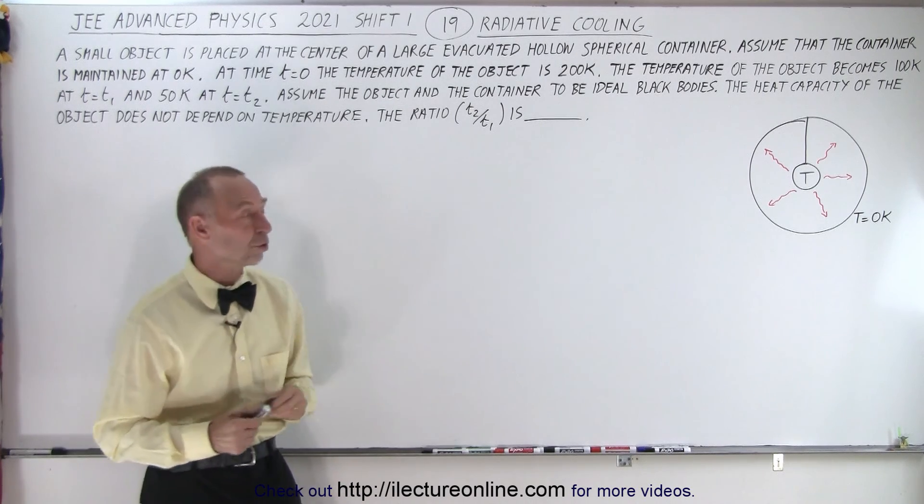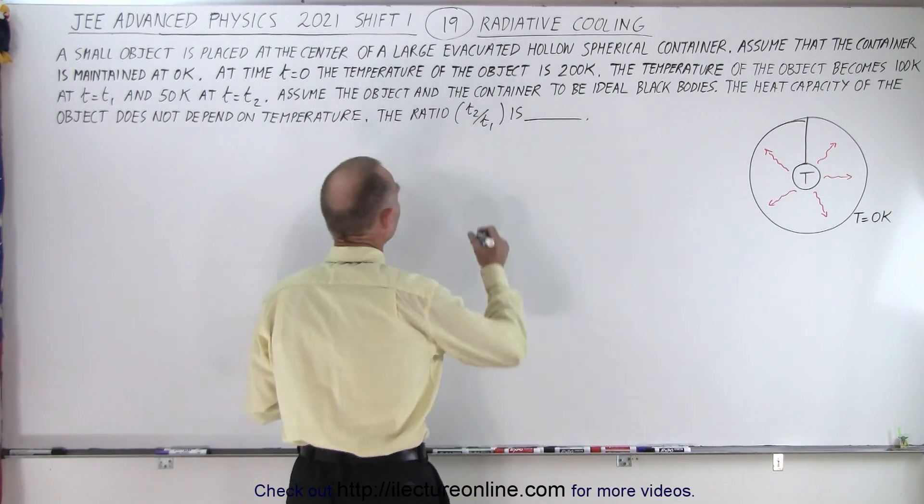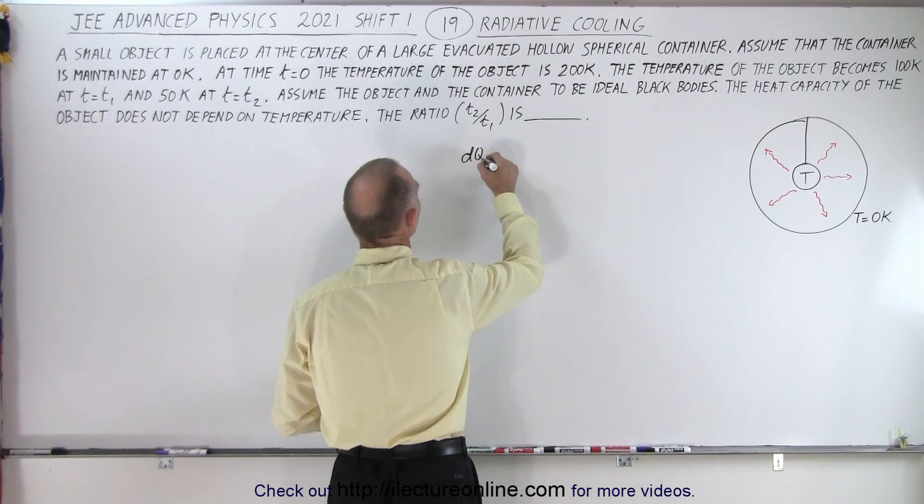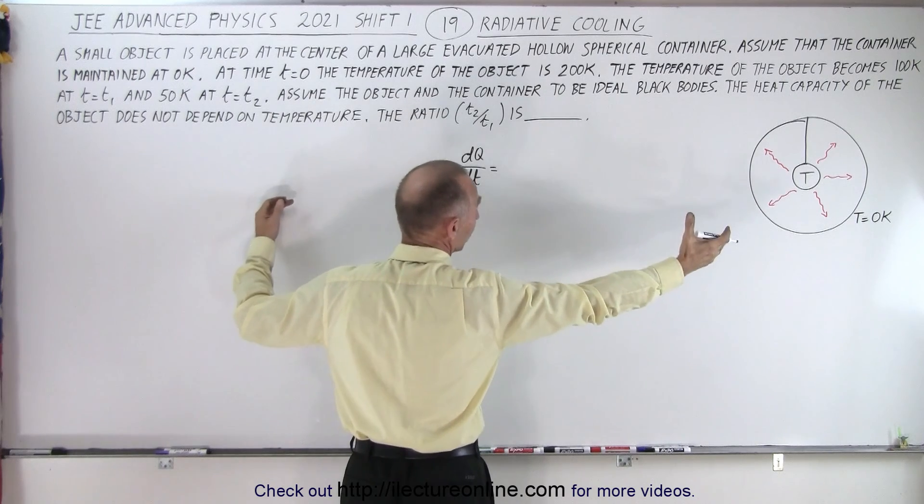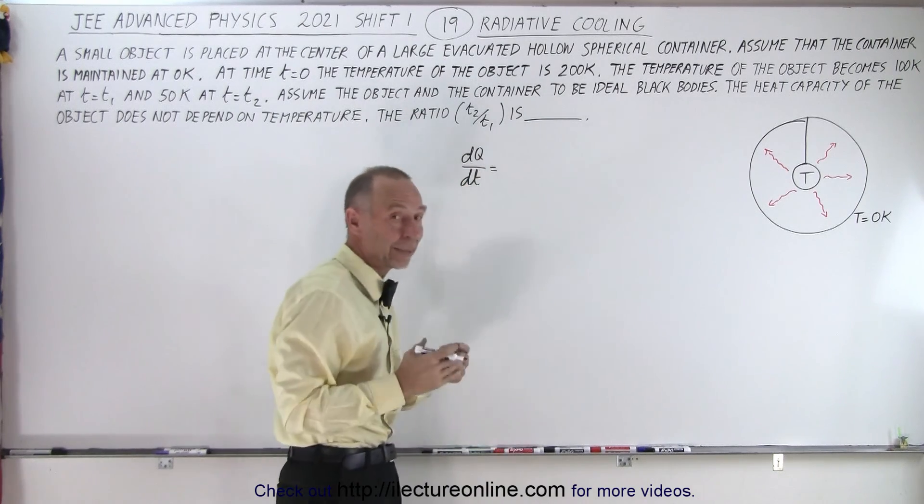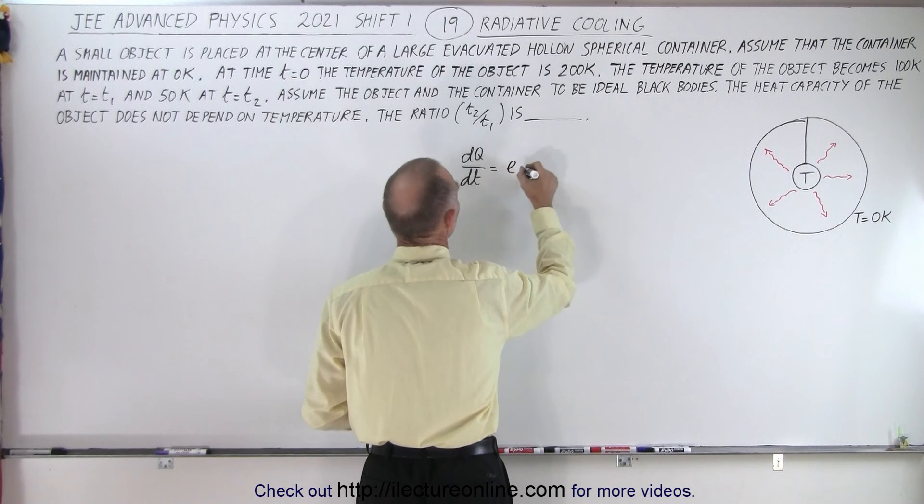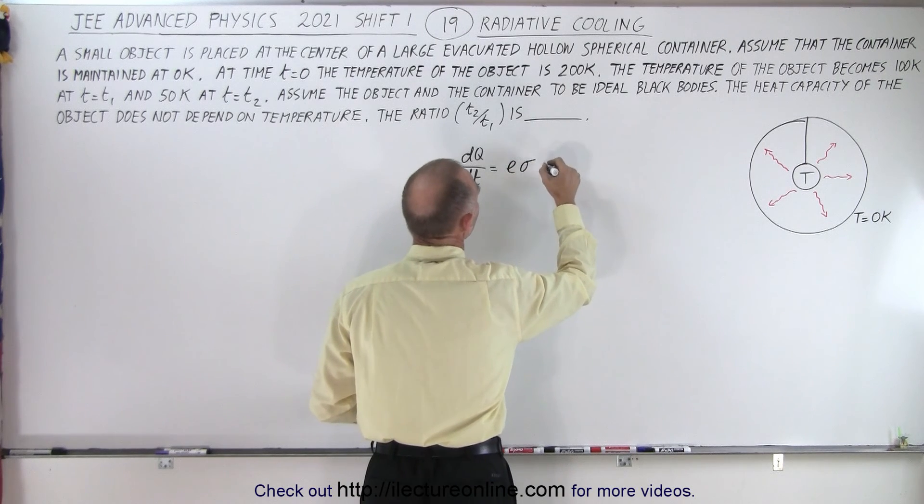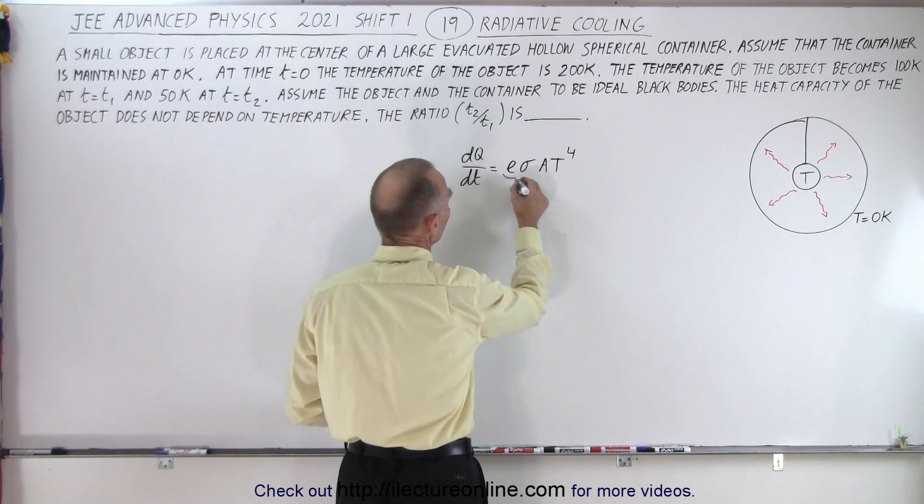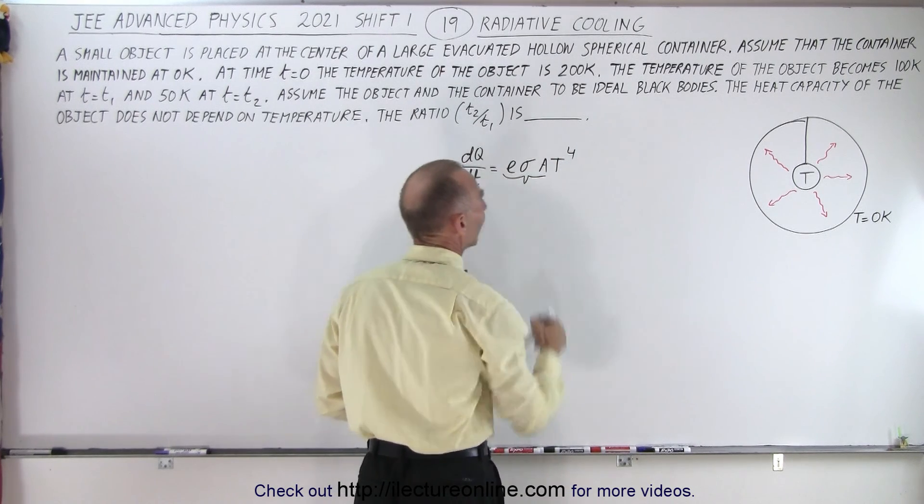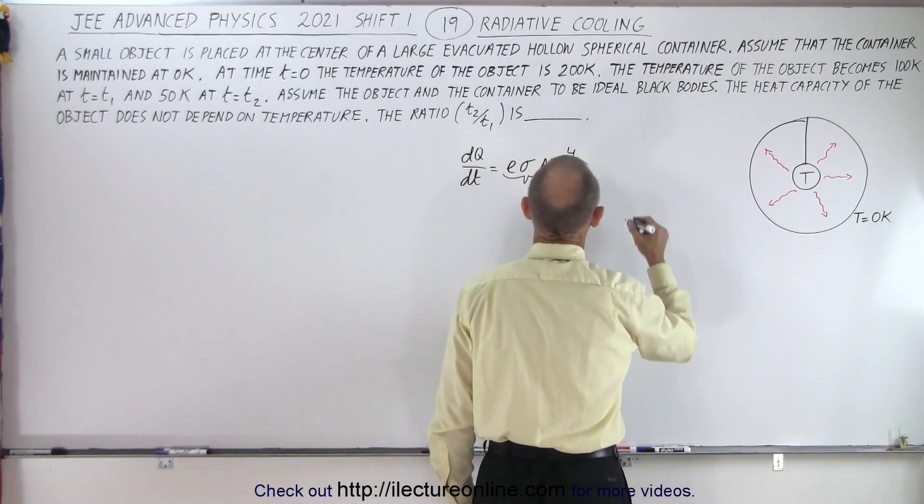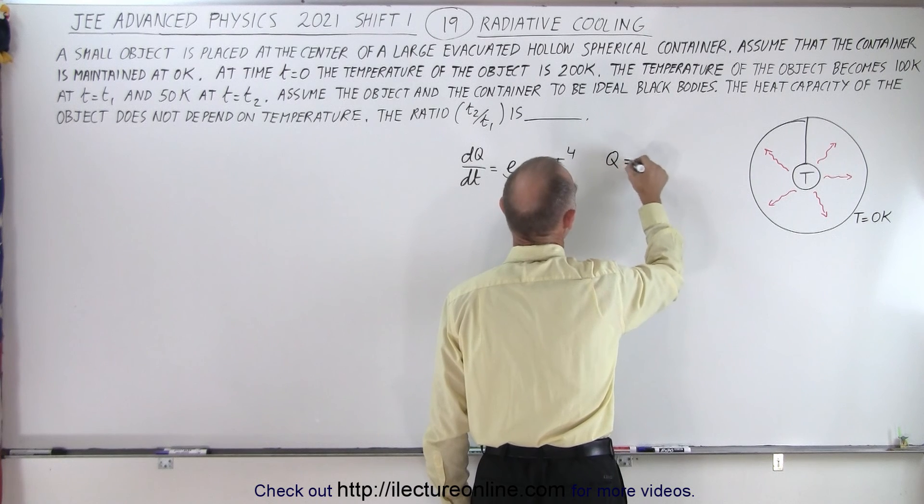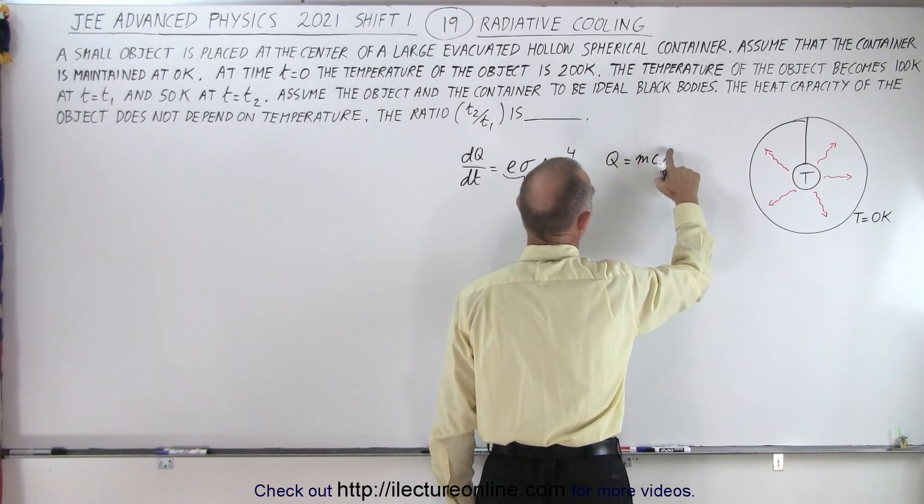There are two equations we need. First, the heat per unit time radiated from an object is dQ/dt = εσAT⁴. Notice that ε, σ, and A are constants; T is the variable. Second, the heat contained in an object is Q = mcT.